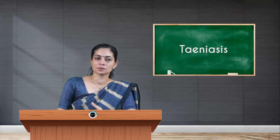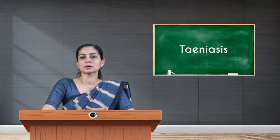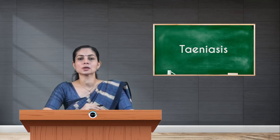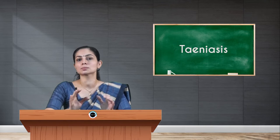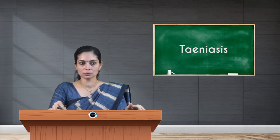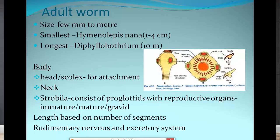Taenia solium and Taenia saginata are the intestinal tapeworms which have three morphological forms. The first stage is the adult worm, where you find long segmented flat tape-like worms — thus the name tapeworms — and the other two stages are the egg stage and the larval stage of the parasite.